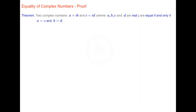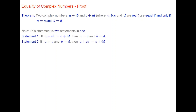We now prove a theorem about the equality of two complex numbers. The theorem states: two complex numbers a plus ib and c plus id, where a, b, c, and d are real numbers, are equal if and only if a equals c and b equals d. That is really saying that two complex numbers are equal if and only if the real parts are equal and the imaginary parts are also equal.